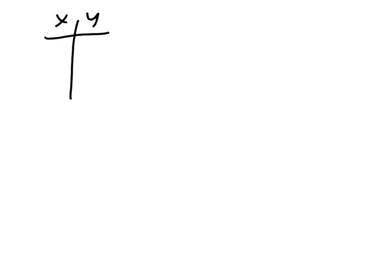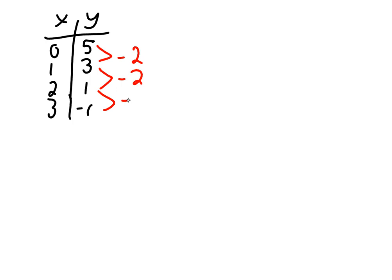The first thing that's really important is we've been looking at a table. We started with looking at a pattern, and that pattern allowed us to make a table, and then we got some information from the table. For example, let's say this is our table — we figured out what we called the first difference, which was what the y's were going up or down by. We had to double check that the x's were going up by one every time.